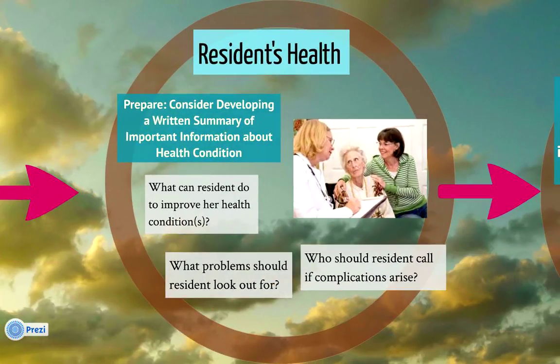The second issue to discuss in a successful care plan meeting is the resident's health. Facility staff might develop a written summary of important information about the resident's health conditions, including what the resident could do to improve their health conditions, what problems or side effects to look out for, and who the resident should contact if complications arise. As an ombudsman, you could advocate for residents by reminding them that it's okay to request this kind of preparation before they're discharged.